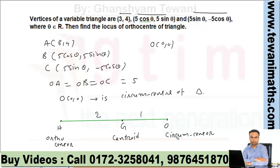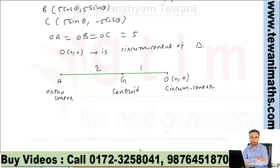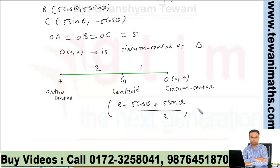Now the circumcenter has coordinates (0,0). The centroid coordinates will be: x = (3 + 5cosθ + 5sinθ)/3, and y = (4 + 5sinθ - 5cosθ)/3.